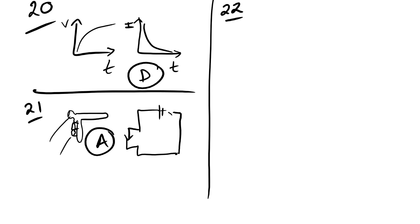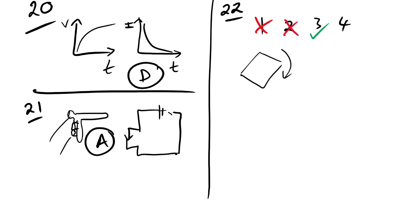Question 22: what can be done to produce an EMF? Moving the coil to the left — no, no change in flux. Moving it towards Y — same, no change in flux. Rotating it about axis YY — yes, because it goes from maximum flux to zero flux and back. Rotating about Z — no, again no change in flux. Answer is A.